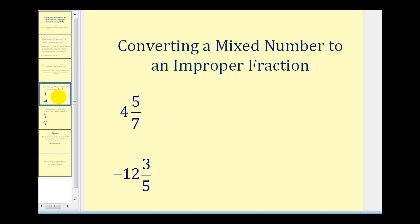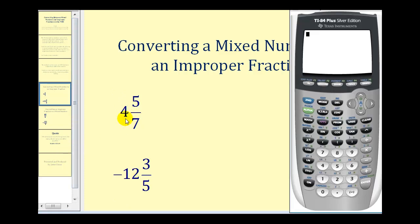Let's start by taking a look at converting a mixed number to an improper fraction. The first example is four and five-sevenths. The graphing calculator does not have a specific fraction key or special way of entering mixed numbers. However, we can think of this as four plus five-sevenths. So if we enter in four plus five divided by seven, we use division for the fraction bar.